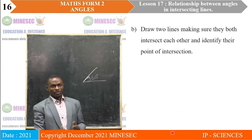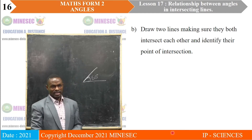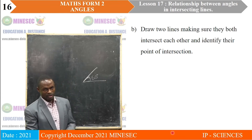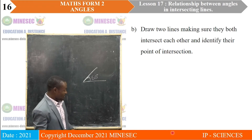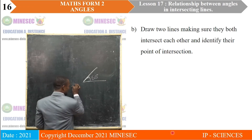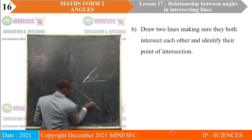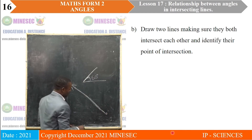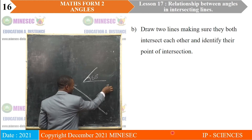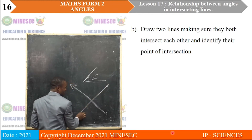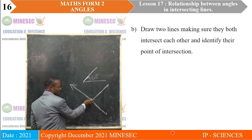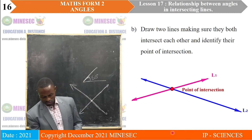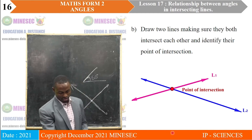Draw two lines making sure they both intersect each other and identify their point of intersection. A line can be drawn to face in any direction. If one line happens to meet another line, it must have a point where the two intersect. That is the two lines drawn with the point of intersection indicated.